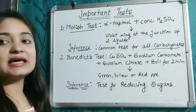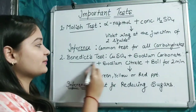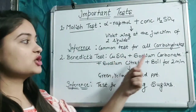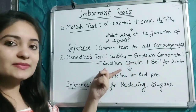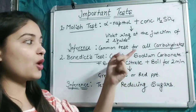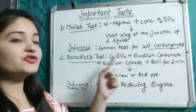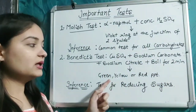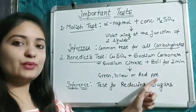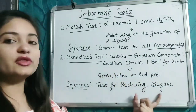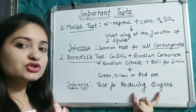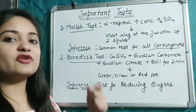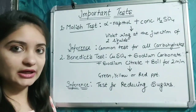Benedict's test requires copper sulfate, sodium carbonate, and sodium citrate, which are boiled for two minutes. After boiling, a green, yellow, or red precipitate is obtained. This test is for reducing sugars — sugars capable of acting as reducing agents because they have a free aldehyde or free ketone group.